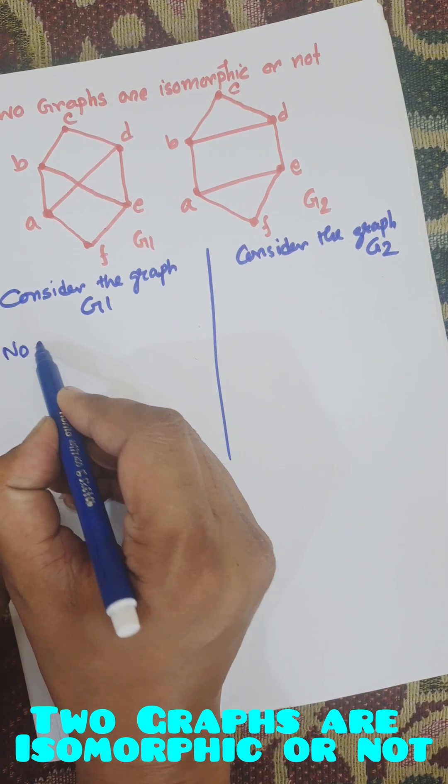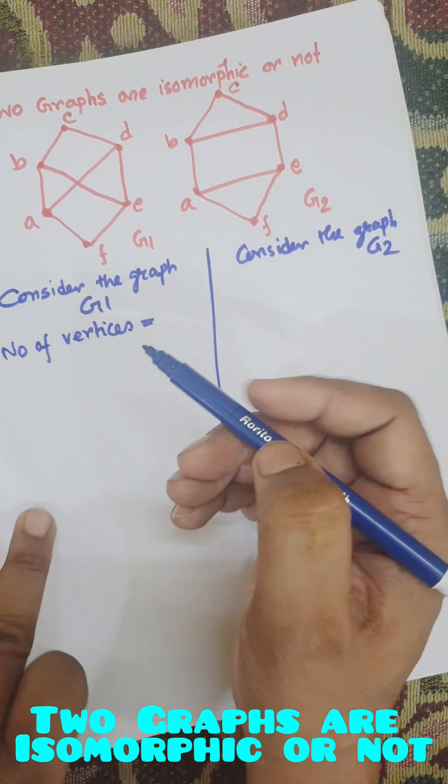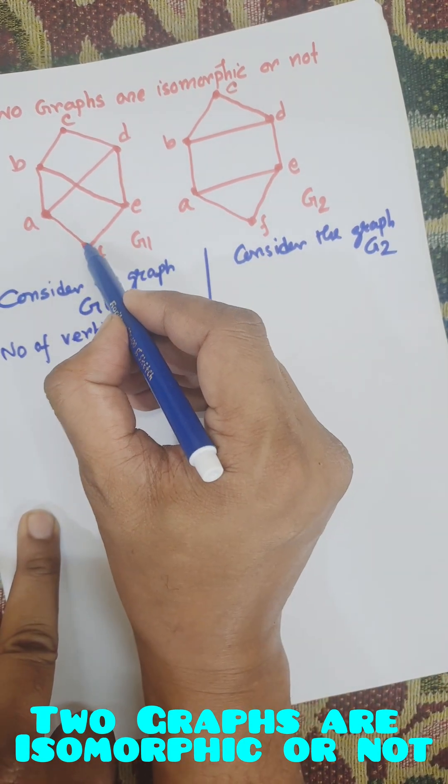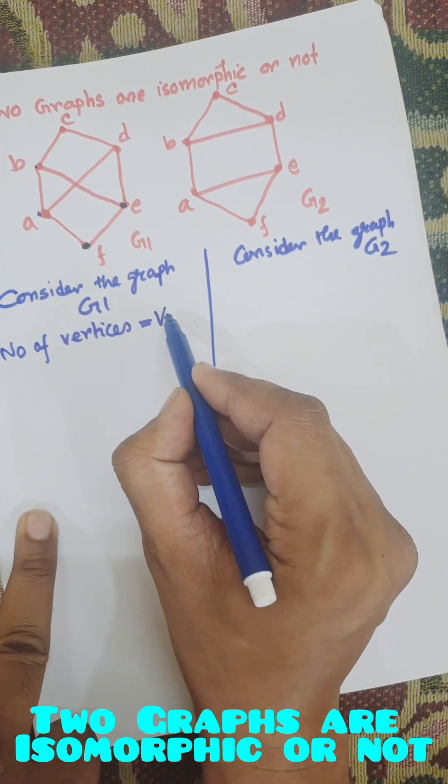Number of vertices, we need to check the number of vertices. 1, 2, 3, 4, 5, 6. V equal to 6.